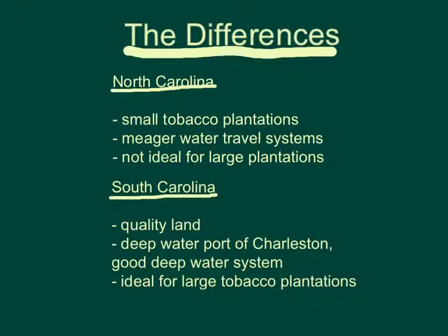Eventually, the differences between North and South Carolina grew so that they could not exist as one entity. In North Carolina, there were very small tobacco plantations, and there were meager water travel systems, which were not ideal for large plantations.